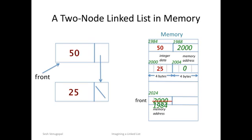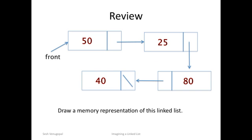Okay, we're almost done. There's just one thing left before we finish and that is a small review exercise. We saw this four-node linked list earlier. The exercise is to draw a memory representation of this linked list following the process we used for the single node and two-node linked lists. You can start with the two-node linked list of 50 and 25 and extend it by adding the nodes 80 and 40. Well, that's it for this lesson. Hope you enjoyed it. See you later.